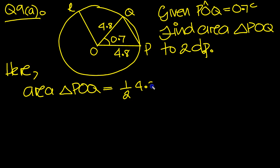So it's half of 4.8 times 4.8 times the sine of 0.7 in radians mode. So we need to tap that in the calculator then.